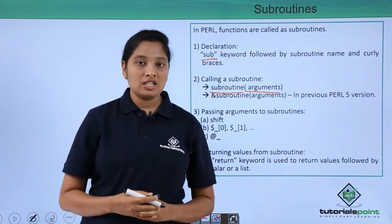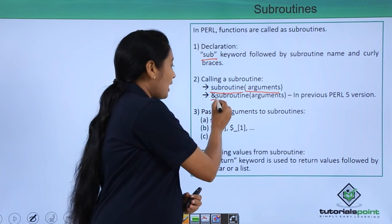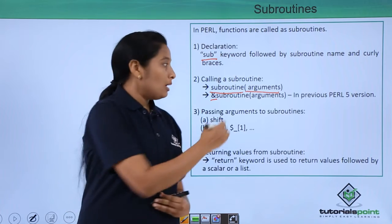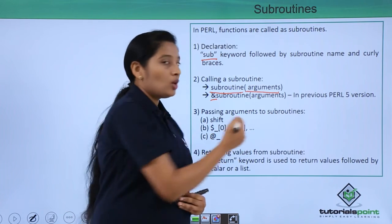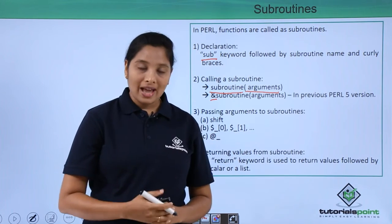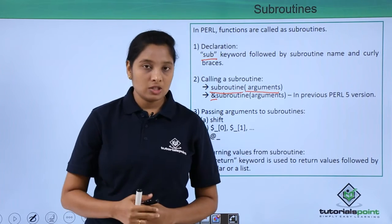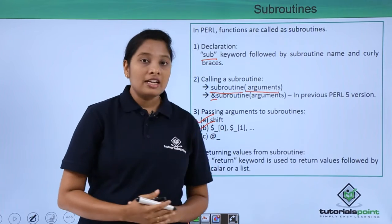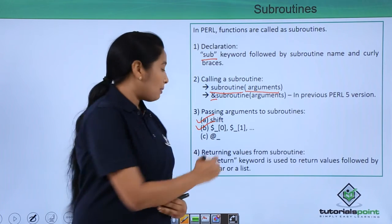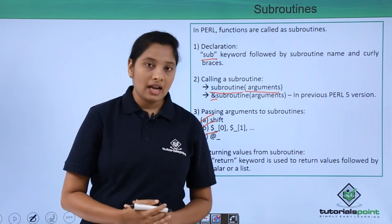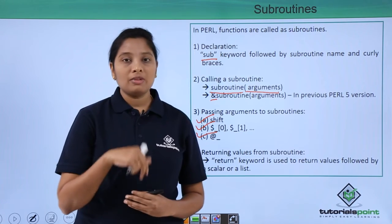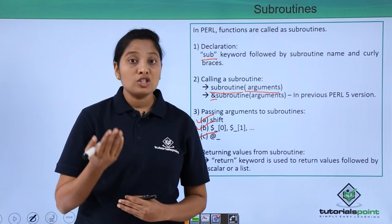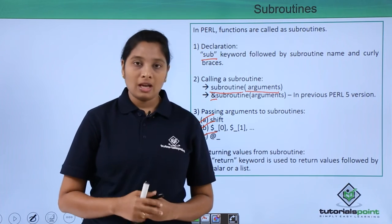In previous Perl versions, we used to use an ampersand symbol before calling a subroutine. While passing arguments, you have to catch them. There are three ways to do so: by using the shift function, second is by using a default variable, and third is by using a special array called @_. To return something from the subroutine, use a return keyword followed by the values which you want to return.